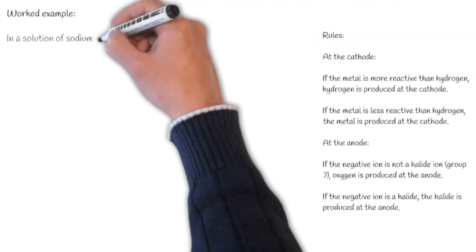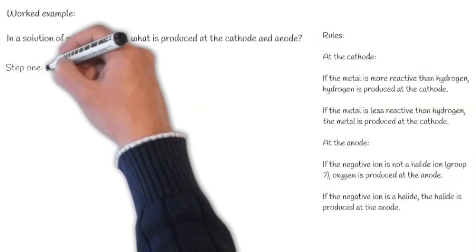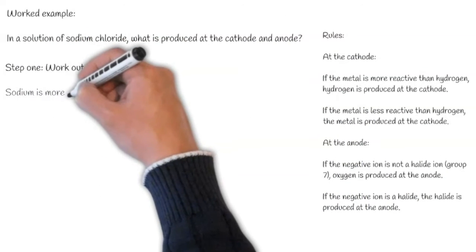Worked example. In a solution of sodium chloride, what is produced at the cathode and anode? Step one, we need to work out the cathode.